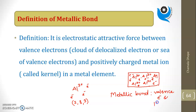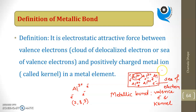Metallic bond is nothing but the electrostatic force of attraction between the kernel — also called the core — and the valence electrons. The core is fixed at one position, but the valence electrons are free to move. From one aluminium atom there are three valence electrons, so there are a large number of valence electrons. This is called the sea of electrons, or cloud of electrons, and they are also called delocalized electrons because they are not fixed at one place.